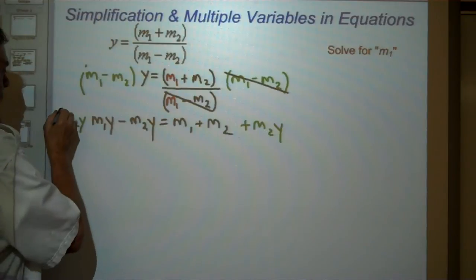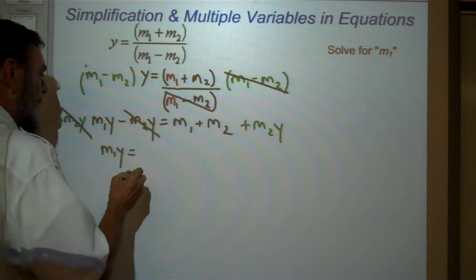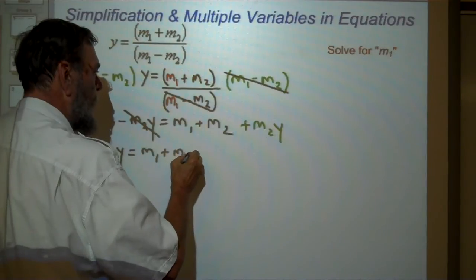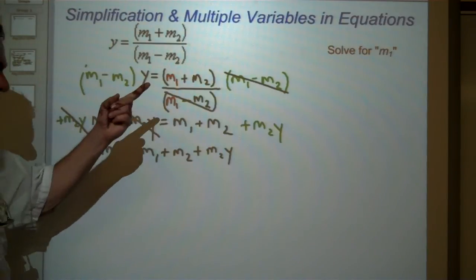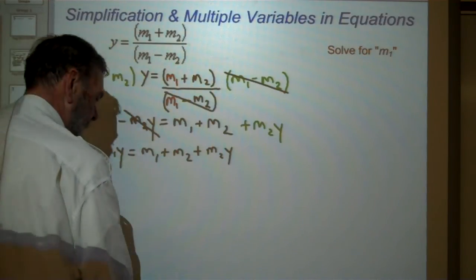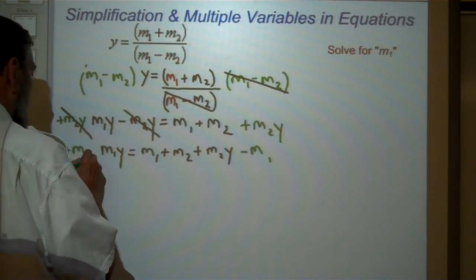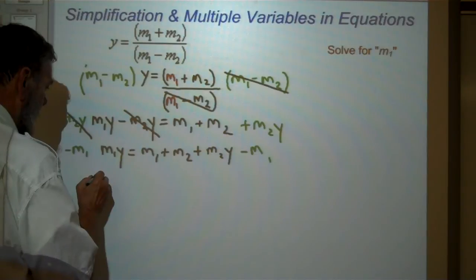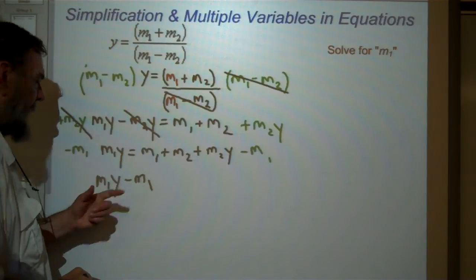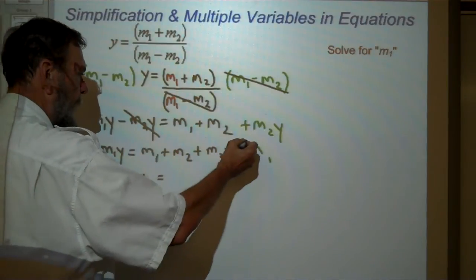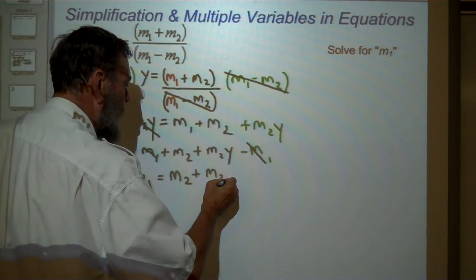When I do that, this cancels, and I'm left with M1Y equals, over here, M1 plus M2Y. Anything with an M1 in it, that's what we're looking for, has to come over to this side. So how do we do it? Very simple. We subtract M1 from both sides. But now I get M1Y minus M1. I like to put the negative term second. Equals, in this case, minus M1 plus M1. So I'm left with M2 plus M2Y.